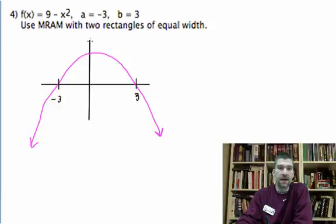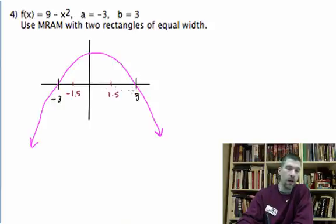So I want two rectangles of equal width using MRAM. MRAM is midpoint area approximation. The midway point then would be at negative 1.5 and positive 1.5. Those are the two midpoints between negative 3 and 0 and 3, because my whole interval goes from negative 3 to 3. That's 6. So if I divide into two equal rectangles, each one would have a base of 3.